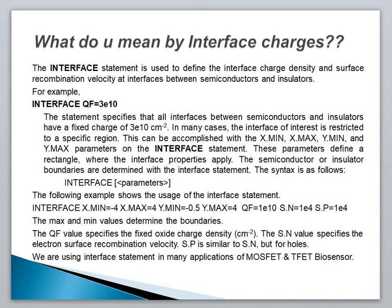With a charge density of QF=1e10, S.N=1e4, and S.P=1e4. The maximum and minimum values determine the boundaries. The QF value specifies the fixed charge density per centimeter squared. The S.N value specifies the electron surface recombination velocity, and S.P is similar to S.N but for holes.